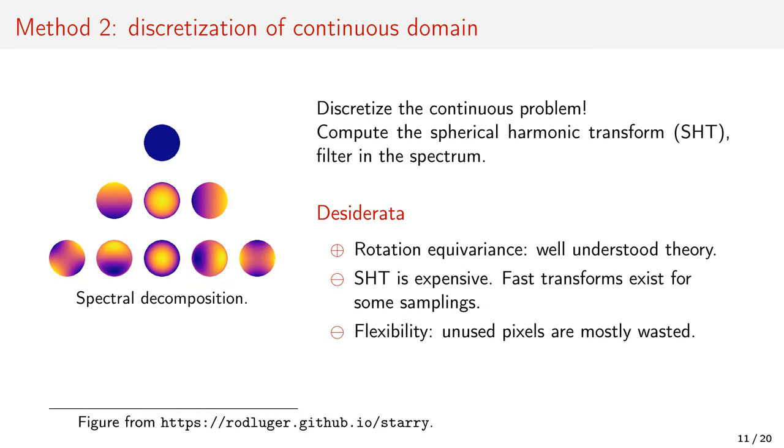Another method is to discretize the continuous problem. From the continuous sphere, you can take the spherical harmonic transform of the data into the discrete spectrum, perform the convolution there, and transform back. Rotation invariance is guaranteed by well-understood theory. Spherical harmonic transforms are, however, expensive.